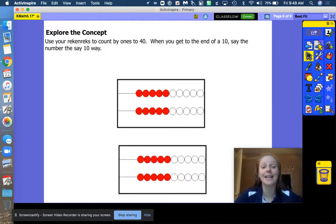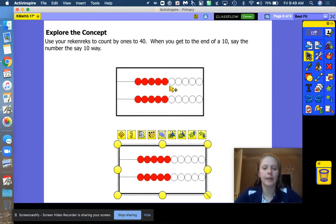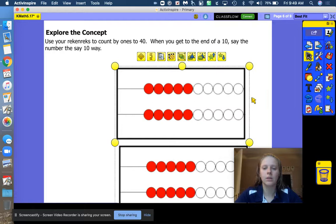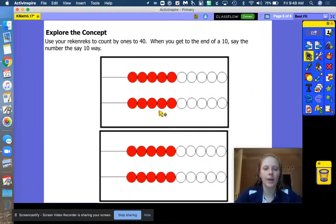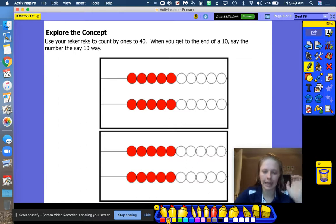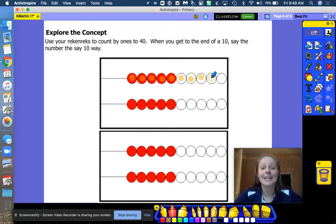Alright, friends. Let's take a look at our rekenrek and see how many we have. Okay. We're going to count them. Let me make it a little bit bigger for you just so you can see it nicely. I'm going to get out an orange marker so you can touch and count with me. Alright. 1, 2, 3, 4, 5, 6, 7, 8, 9, 10. Say 1, 10 equals 10. We have 10 on the first row. Good job.